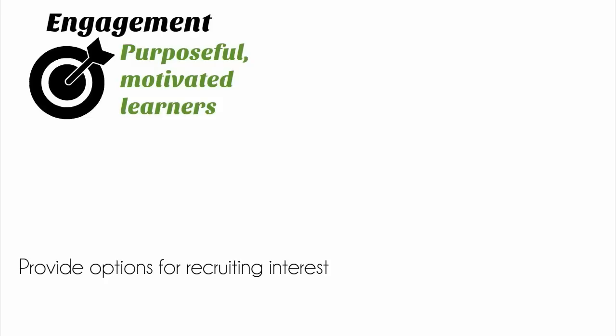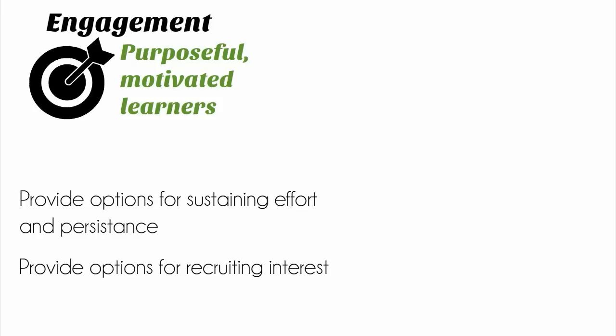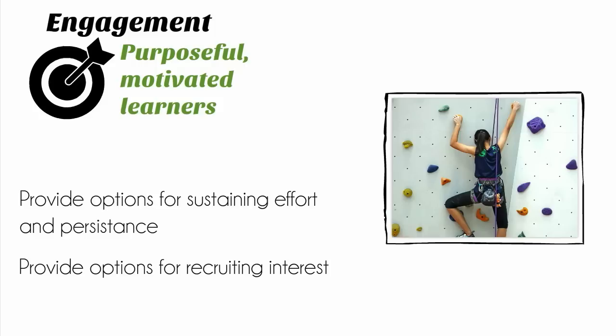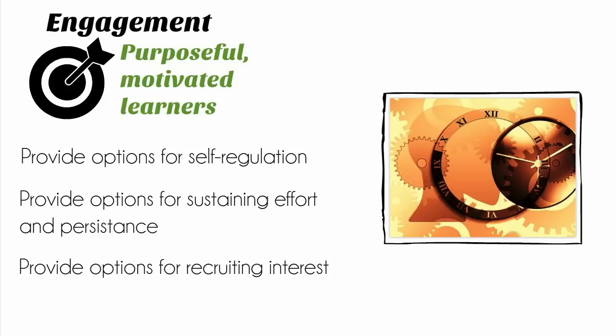So let's begin with engagement, with the goal of purposeful, motivated learners. Provide options for recruiting interest — this is what people usually think about when we talk about engagement: the anticipatory set, getting students' attention, providing choice. Provide options for sustaining effort and persistence — this guideline explores ways to support learners in becoming more resilient, to persist in the face of difficulty, and to give their best effort in all situations. Provide options for self-regulation — this focuses on helping students learn how to self-monitor and self-assess their motivation, stress, and behavior, as well as their states of mind, and then apply various strategies to help them redirect or reinforce their behaviors.